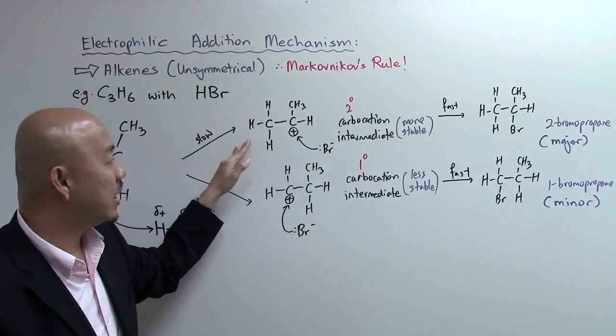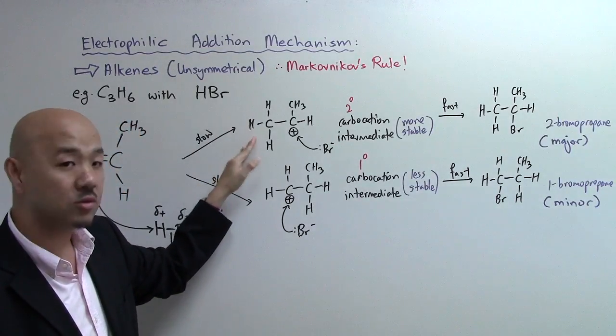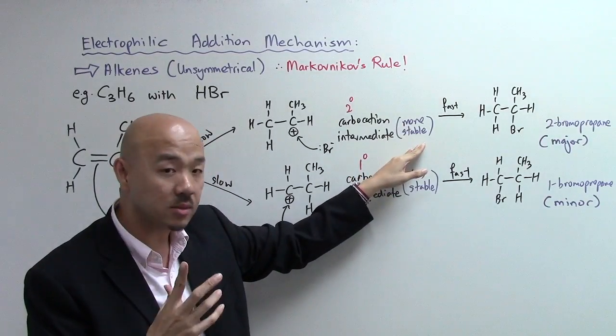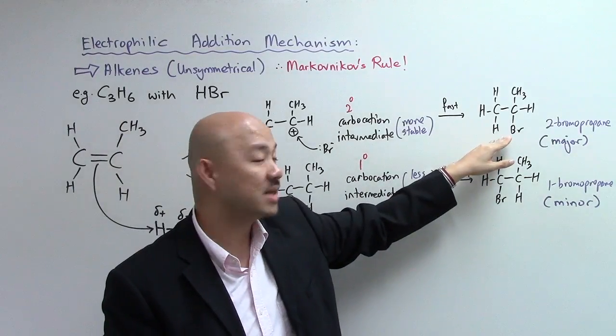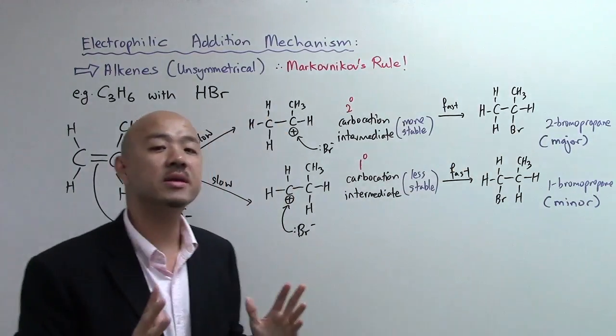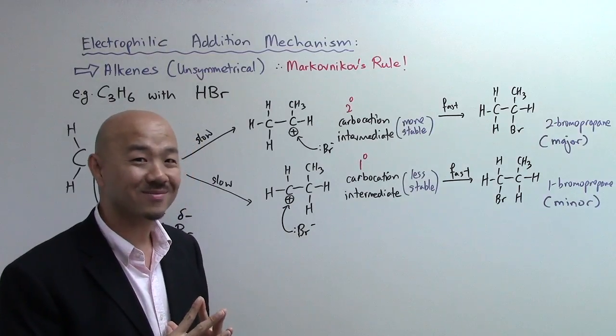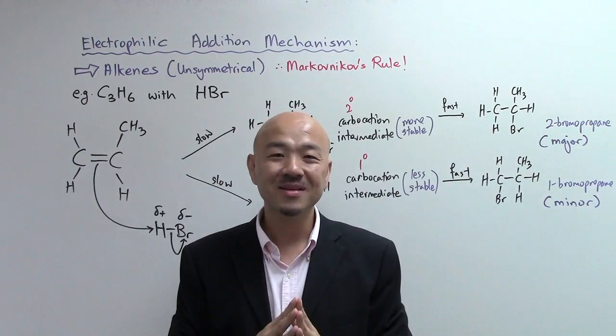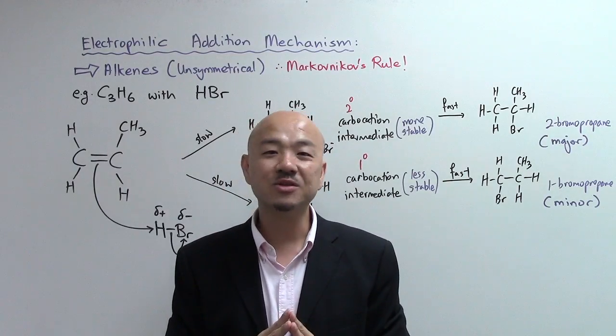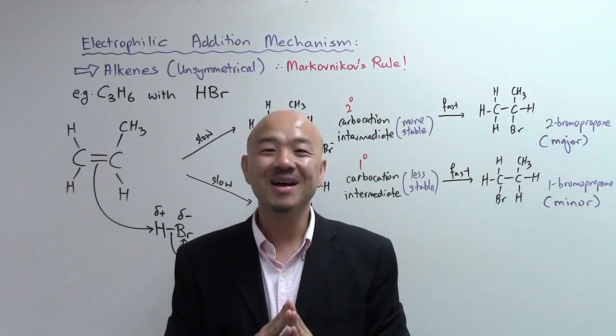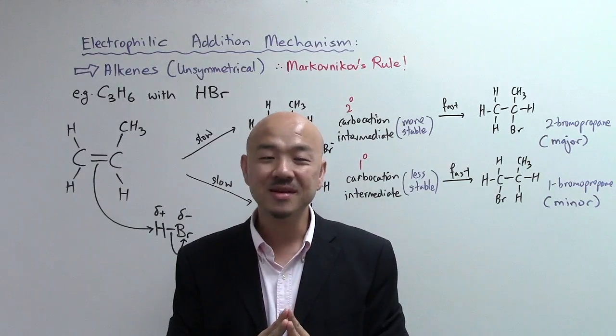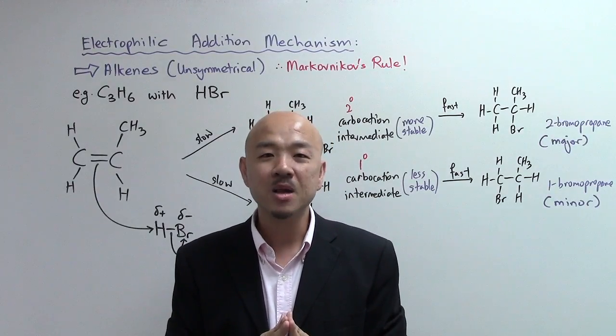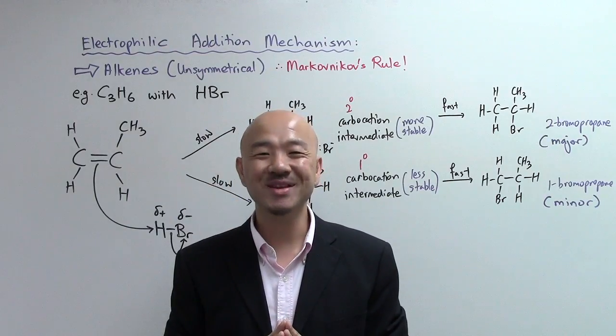Because in this way you have two different types of carbocation intermediate, and according to Markovnikov, the one that has more alkyl groups will be more stable. The carbocation will be more stable, and thus after you go through the second step, the fast step, that product should be the major product. I hope you enjoyed yourself and learned a lot about Markovnikov's rule with regards to electrophilic addition of unsymmetrical alkenes. Feel free to share this with your friends, especially those that really need help on organic chemistry. I look forward to seeing you in the next video. Thank you.